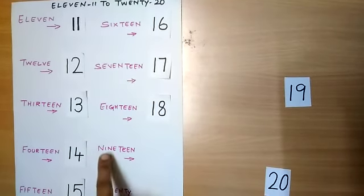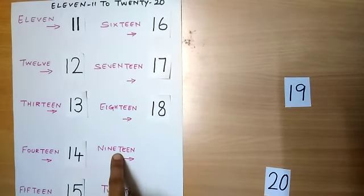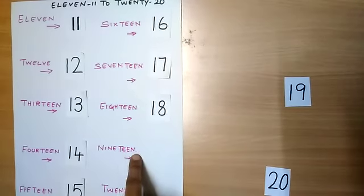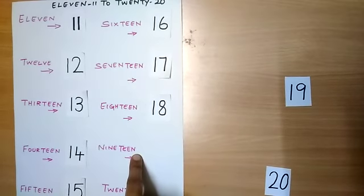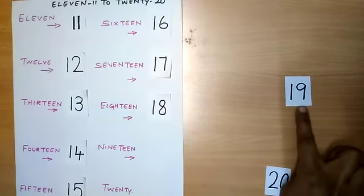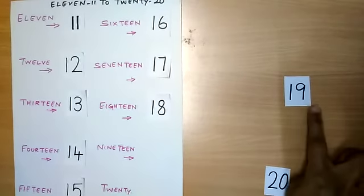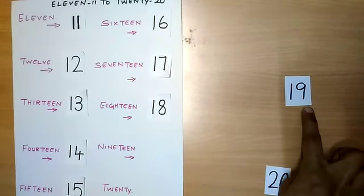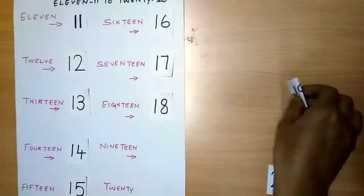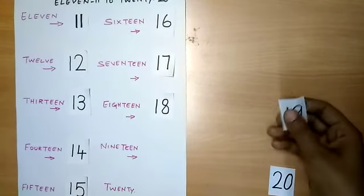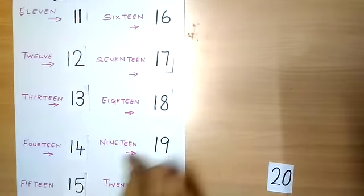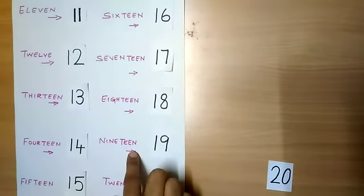N-I-N-E-T-E-E-N. That is 19. Where is number 19? This is number 19. 1 and 9 makes number 19. So let me arrange number 19 to the number name 19.